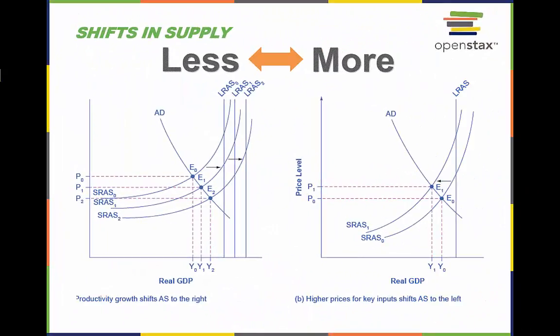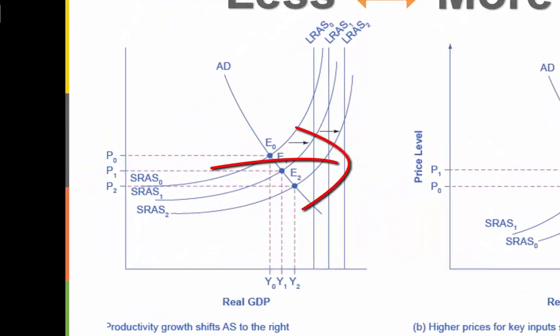The aggregate supply and aggregate demand curves can move to the left, which is a decrease, or to the right, which is an increase. A rise in productivity causes the aggregate supply curve to shift to the right. The original equilibrium E0 is at the intersection of aggregate demand and aggregate supply. When aggregate supply shifts right, the new equilibrium E1 is at the intersection of AD and AS1, and E2 is at the intersection of AD and AS2. Shifts in aggregate supply to the right lead to a greater level of output and downward pressure on the price level.